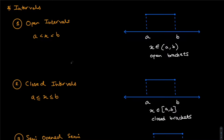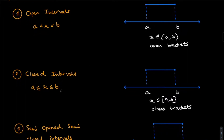Now let's look at a few concepts of intervals. We essentially have three types. The first is the open interval — both signs are strict greater than or less than, denoted with parentheses on the number line. So x belongs to all values between A and B but does not include A and B. Then we have closed intervals, where the inequality includes the horizontal line below — equal to as well — meaning it is inclusive of both A and B and the values in between.